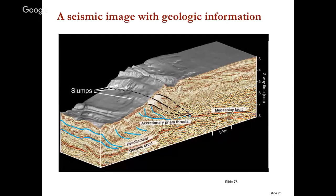Here's an example at a fairly large scale — about 30 kilometers across, five kilometers deep. This is oceanographic data showing slumps coming down from the ocean floor. You can see lots of texture, and somebody has drawn lines indicating where they think the oceanic crust is and where there are décollements. Knowing something about the geology, you start to recognize events going through and identify particular interfaces that are useful.